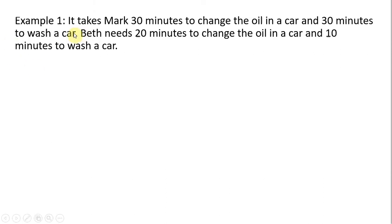Example one. It takes Mark 30 minutes to change the oil in a car and 30 minutes to wash a car. Beth needs 20 minutes to change the oil in a car and 10 minutes to wash a car. We're going to figure out who has a comparative advantage in which good. We should note that Beth has an absolute advantage in producing everything — she needs less labor input to produce a given quantity of either oil changes or car washes.